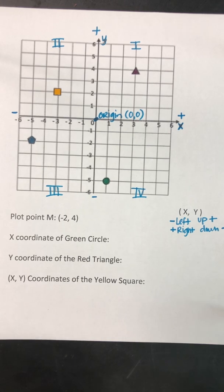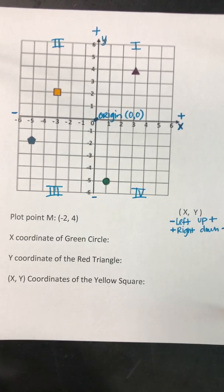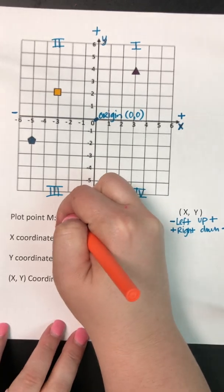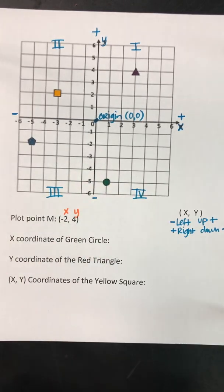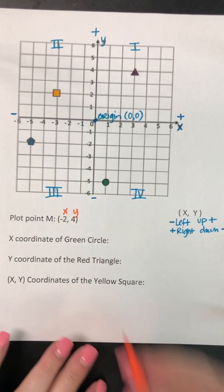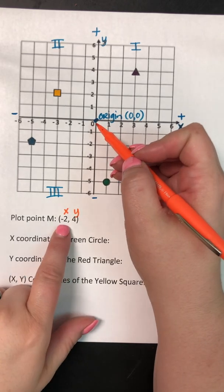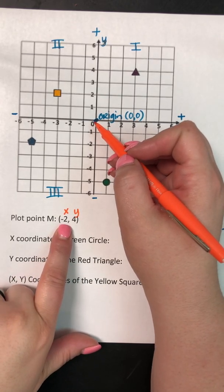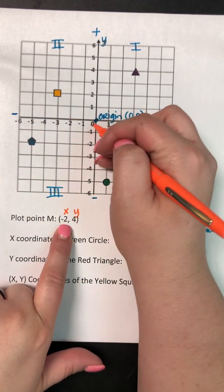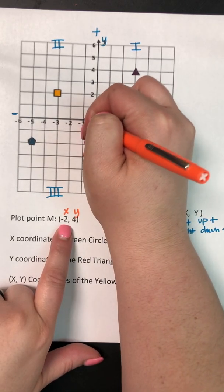So the first thing that I would do to plot that point is I would label my x and y. So I'm gonna say okay I know this is my x-axis, this is my y-axis. So I'm going to start at my origin and I'm gonna walk negative 2. So I know my negative numbers are left, so I'm gonna go left, 1, 2.